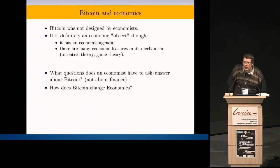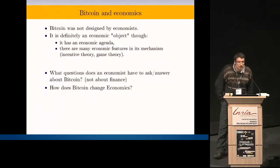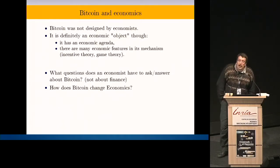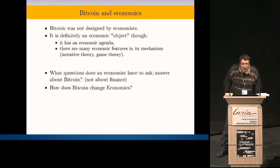Bitcoin has been created pseudonymously by someone or maybe a group of persons named Satoshi Nakamoto. The first paper was written in 2008. There are many speculations about who this guy or these guys may be. Definitely, there is no economic trace or something. So we may be comfortable saying that Bitcoin was not designed by economists. However, it is definitely an economic object.